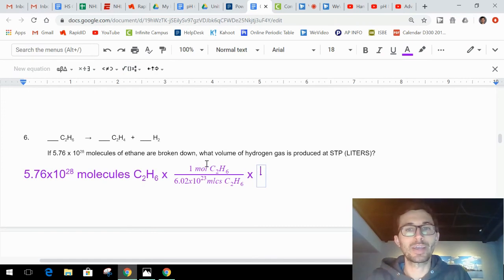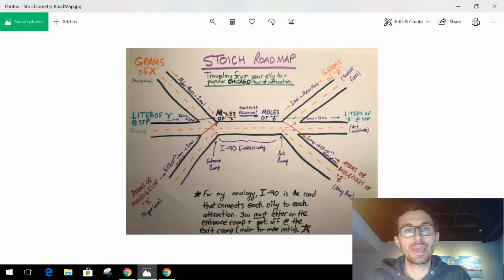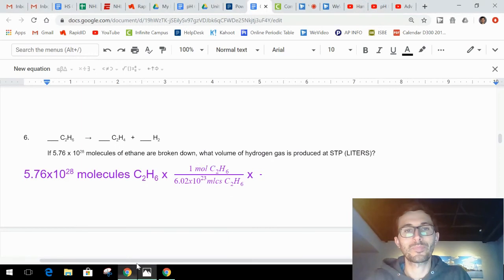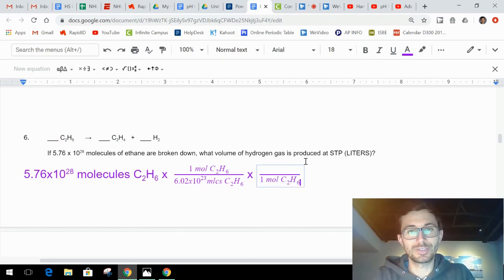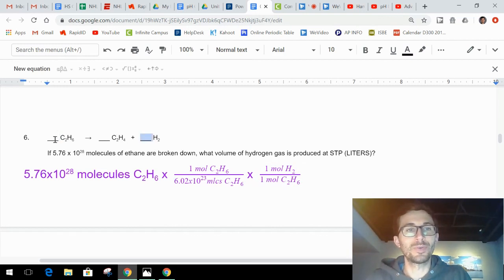Now I'm in a mole to mole part, so I got to convert moles of C2H6 to moles of hydrogen gas. I got to use my balanced equation. Everything's a one-to-one ratio, that's the best kind of balanced equation. One mole of C2H6 because I need to cancel that out, one mole of H2. One more conversion, I'm trying to get to liters.